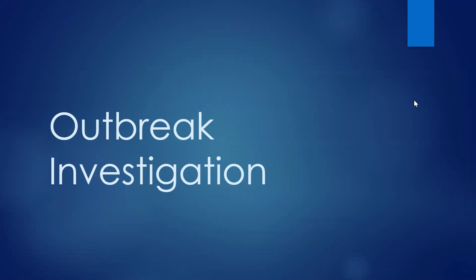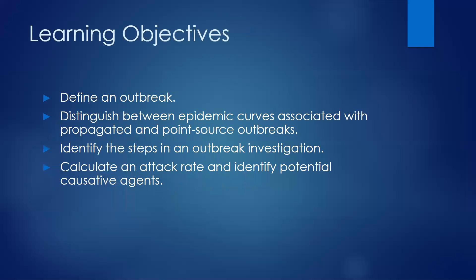Hello there. I'll be talking for the next few minutes about how to investigate outbreaks in epidemiology. The objectives are to define or remind you what an outbreak is, briefly review the types of epidemic curves associated with propagated and point source outbreaks, and then mostly focus on identifying and talking through the steps in an outbreak investigation. Part of that involves calculating an attack rate and using that information to identify what might be the cause of the outbreak.